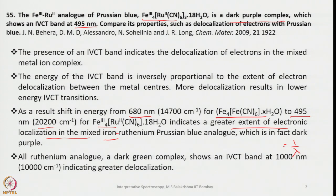If you consider the all-ruthenium analog — Ru3 and Ru2 — it is a dark green complex that shows an IVCT band at 1000 nm, indicating even greater delocalization. It is an even more delocalized system compared to the pure ruthenium analog of Prussian blue.